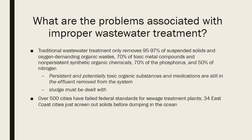There are some problems with improper wastewater treatment. The traditional wastewater process only removes about 97 percent of suspended solids and oxygen-demanding wastes. The majority of toxic metals, synthetic organic chemicals, phosphorus, and nitrogen are removed, but some remains — about 30 percent of toxic metals, 30 percent of phosphorus, and half of the nitrogen are still present when water leaves the treatment plant. Persistent toxic substances and medications in the effluent also pose a big threat to ecosystems and to people who will use that water later.